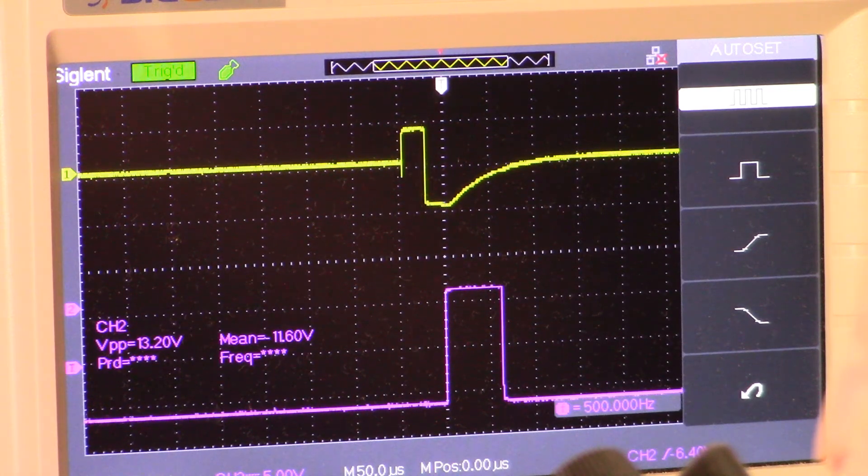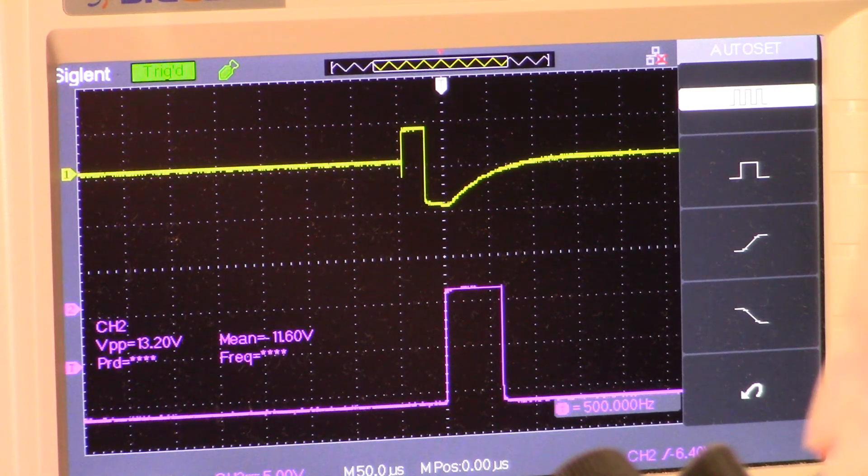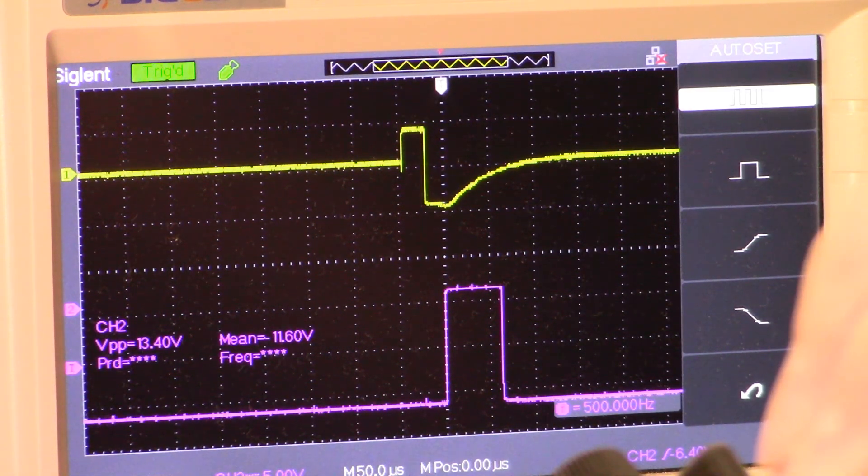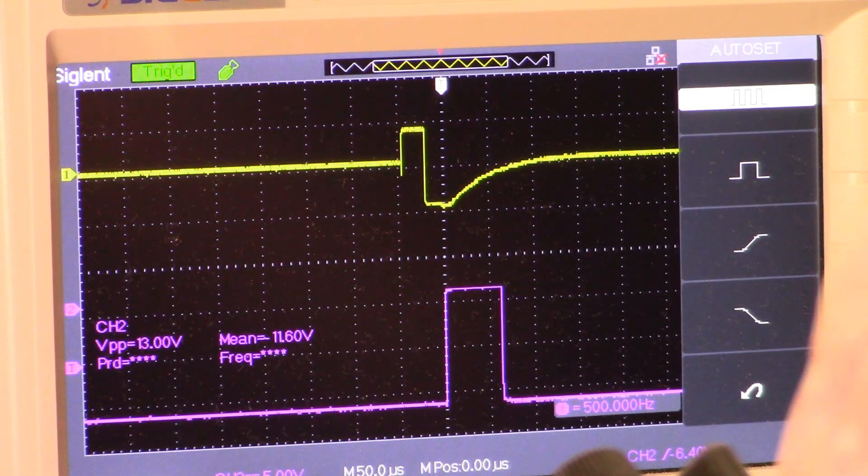All right guys, so what we see on the screen: we have the output of the preamp as channel 1, and on channel 2 we have the sample pulse. I'm going to switch my probes and show you where the sample delay is and what that looks like, and we'll go from there.